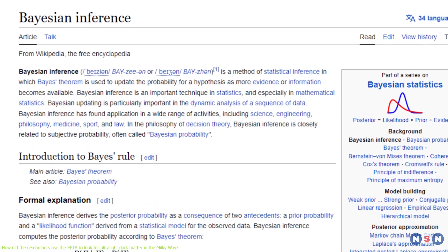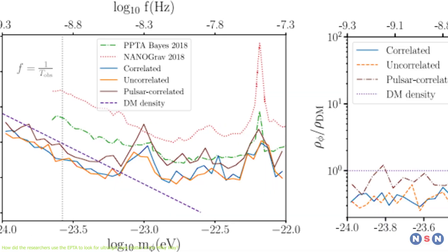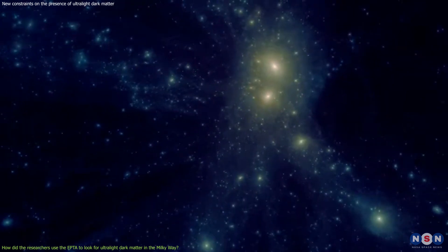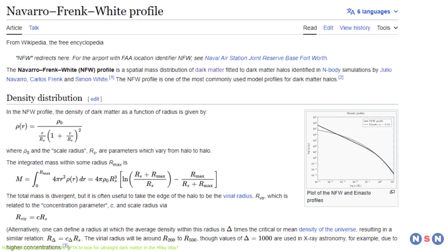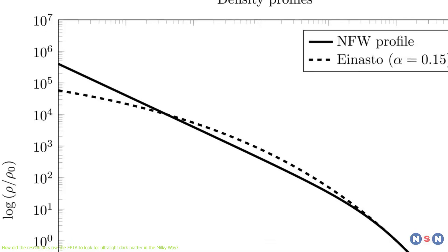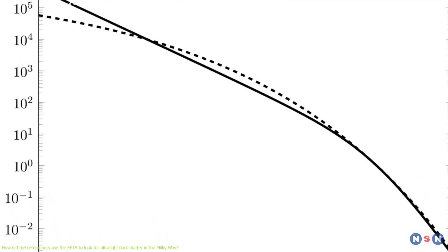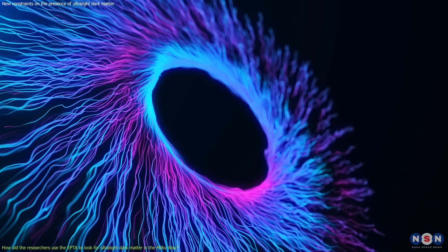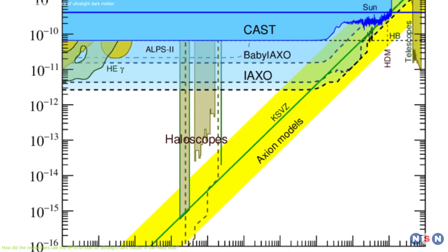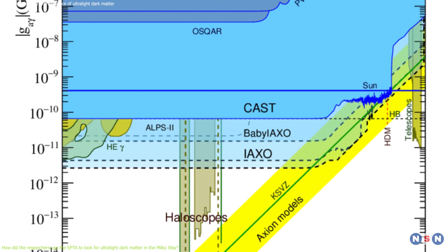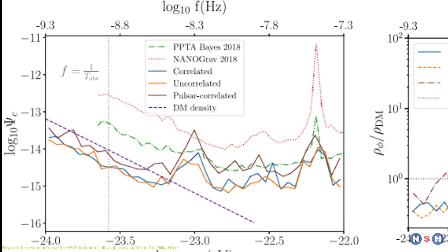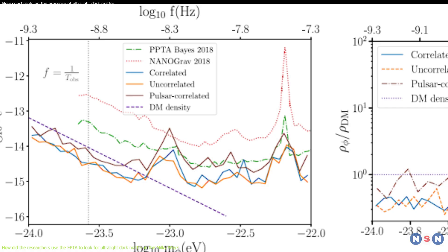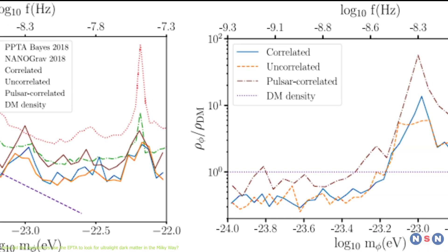The researchers used a statistical technique called Bayesian inference to analyze the data and compare different models of dark matter and gravity. They assumed that the dark matter halo follows a standard profile called the Navarro-Frank-White profile, which describes how the density of dark matter varies with distance from the center of the galaxy. They also assumed that the dark matter particles are axion-like particles, which have a specific relation between their mass and their coupling to gravity, called the QCD-Axion relation. They then calculated the likelihood of each model given the data and used a criterion called the Bayes factor to compare the models and determine which one was more favored by the data.